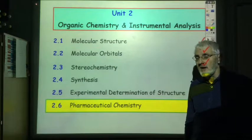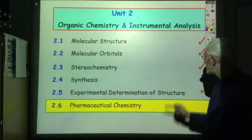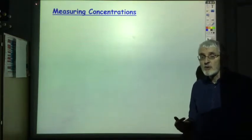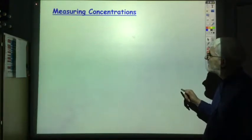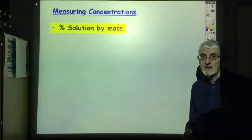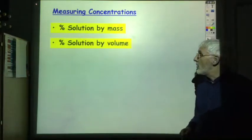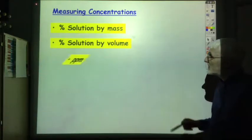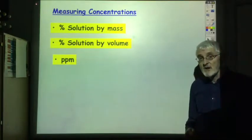In this final lecture on pharmaceutical chemistry, we're going to look at slightly different ways of expressing concentrations. As chemists, we are more used to expressing concentration as moles per litre, but occasionally people use certain alternative ways of expressing concentration. Sometimes we talk about the percentage solution by mass — for example, a 2% solution of sodium chloride — or the percentage solution by volume, such as a 10% solution of ethanoic acid, or sometimes we talk about concentrations as ppm. So we're just going to run through these different ways of expressing concentration.